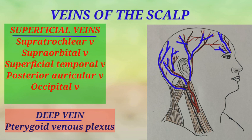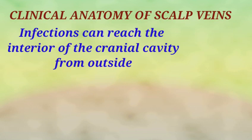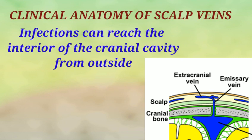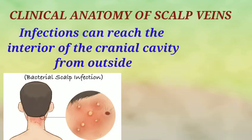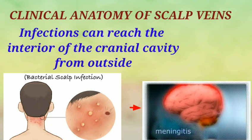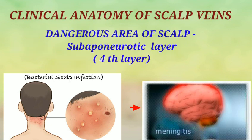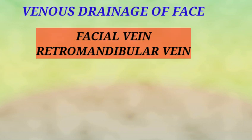The deeper part of the scalp drains into the pterygoid venous plexus. Infection can reach the interior of the cranial cavity from the outside. The loose subaponeurotic layer of the scalp contains the emissary veins, which connect the superficial veins to the intracranial dural venous sinuses. Any infection outside the scalp can easily spread through these emissary veins into the dural venous sinuses, causing intracranial infection. Hence, this space — the loose subaponeurotic layer — is also called the dangerous area of the scalp.